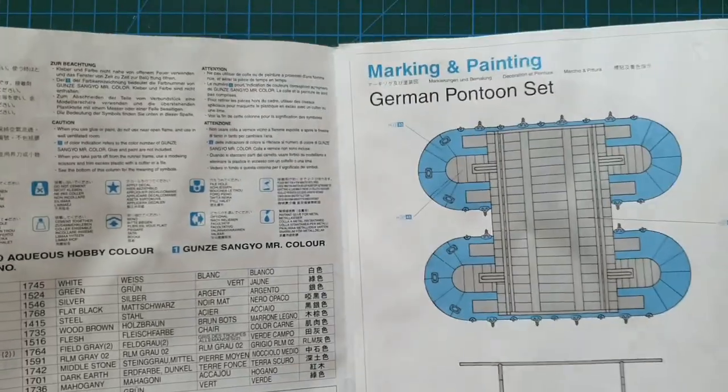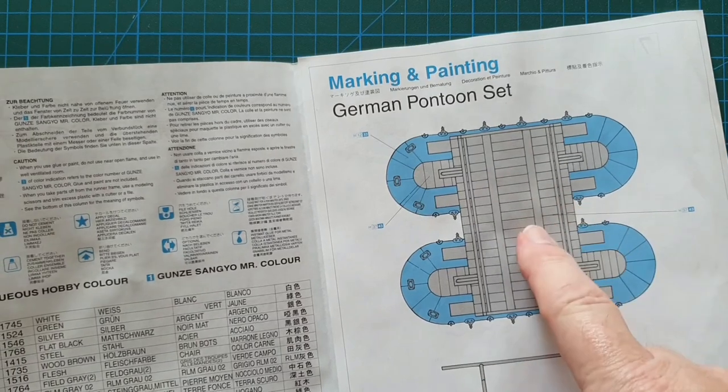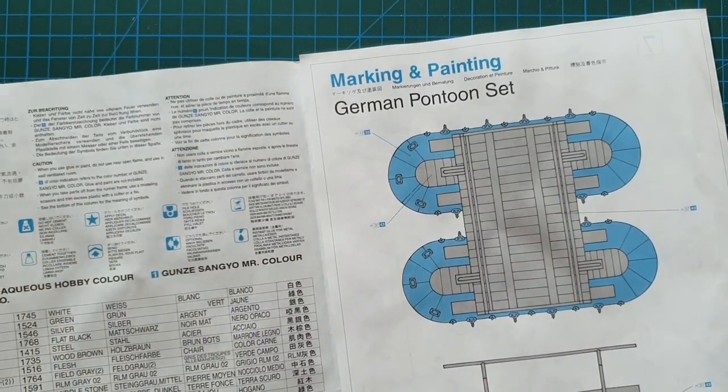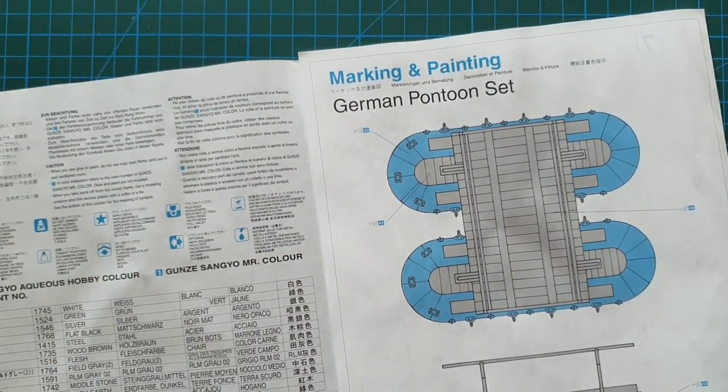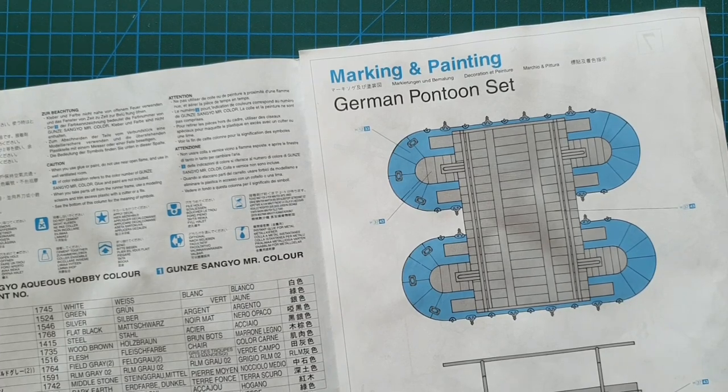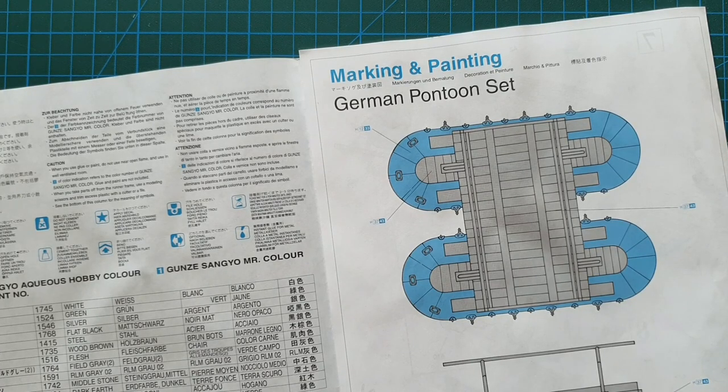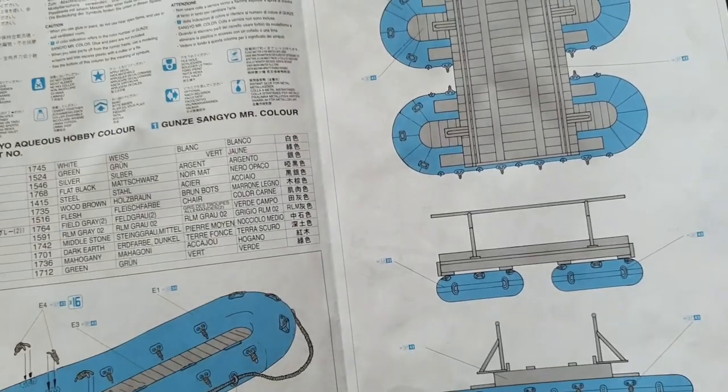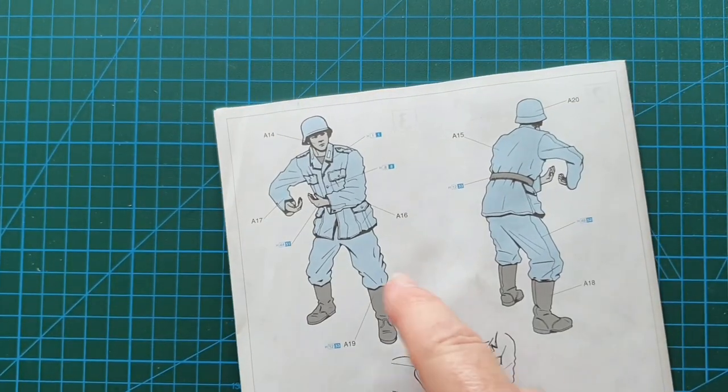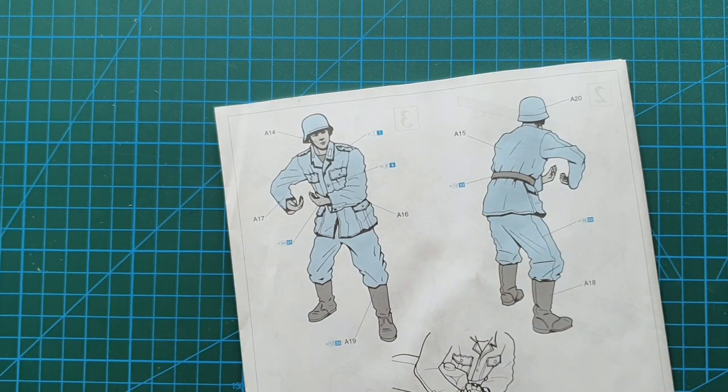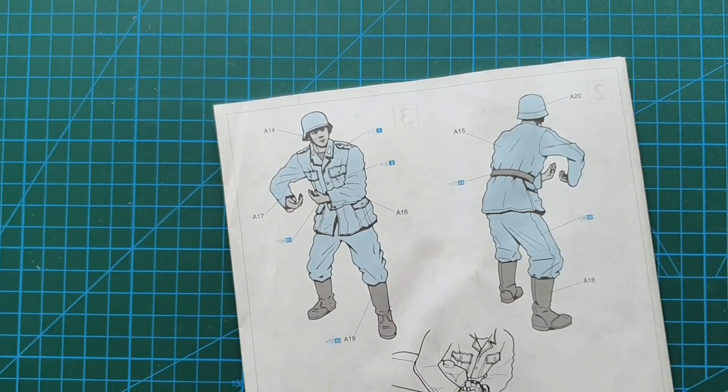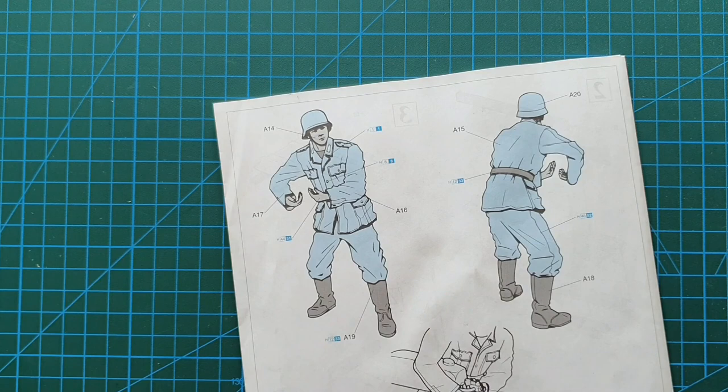That's fairly straightforward and on the back just shows you painting and markings. There are no markings on this, it's a rubber raft with a timber pontoon bridge section on it, there really is no markings to go on here, they didn't have markings on these. And the last is literally your operator for the stern boat, fairly simple construction.